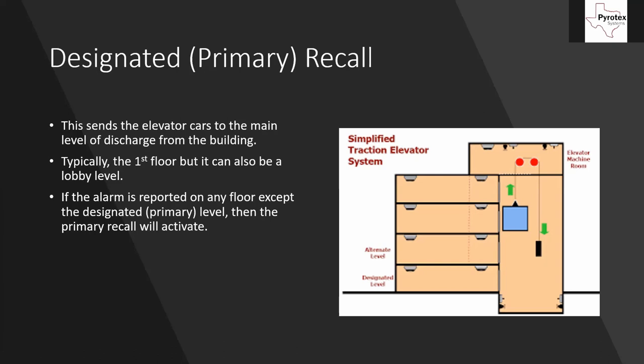The designated recall level is typically the first floor but can also be a lobby level - whichever the authority having jurisdiction designates as the primary means of egress. Around the Houston area everything is so flat it's almost always the first floor, but in hill country or mountainous areas buildings can be shaped differently. You can walk in the front doors and be on the second floor of the building, then go downstairs to exit through a different set of doors. In those cases a different level can be designated; here around Houston the flatness almost always makes it the first floor.